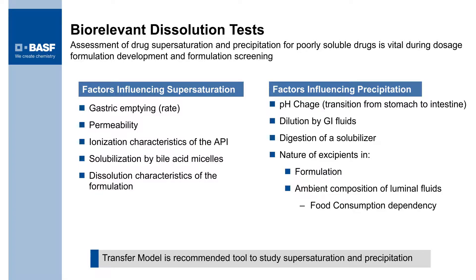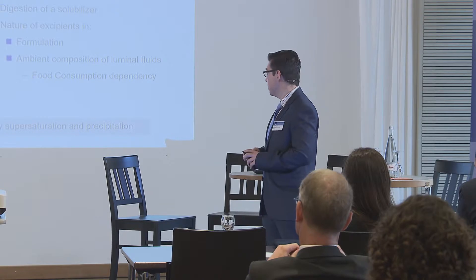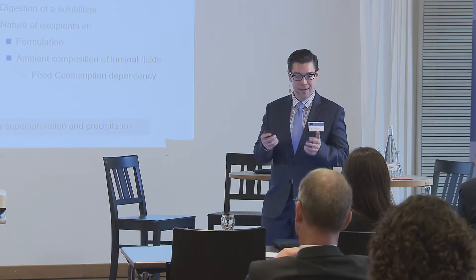Looking at bio-relevant dissolution tests and factors influencing supersaturation of these formulations — we've already touched on many of these. In the interest of time: gastric emptying, permeability, ionization characteristics of the API, the influence of micellization and bile acids, and how those form complex micelle-type units once in the gastric fluid. Factors influencing precipitation include pH change, GI fluid, and digestion of the solubilizers. Even the solubilizers and surfactants are subject to lipolysis and other digestion processes, as well as the nature of the excipients.